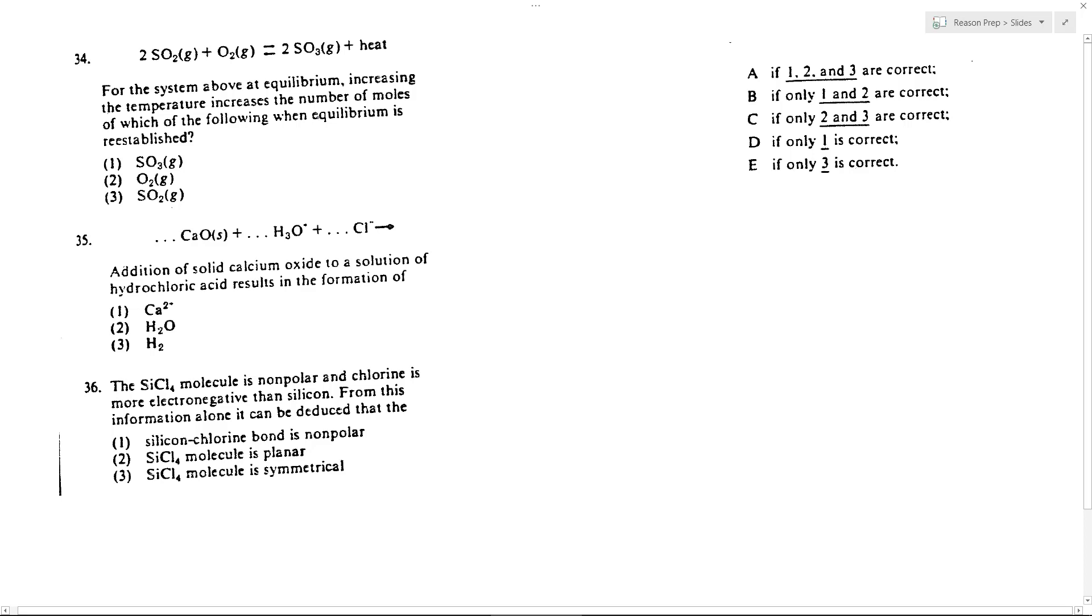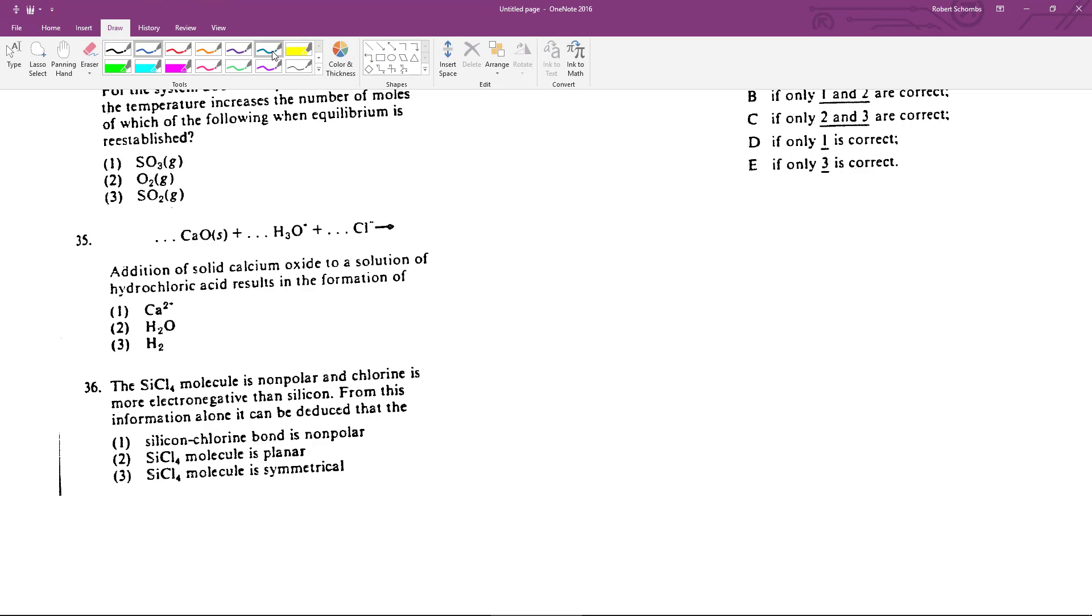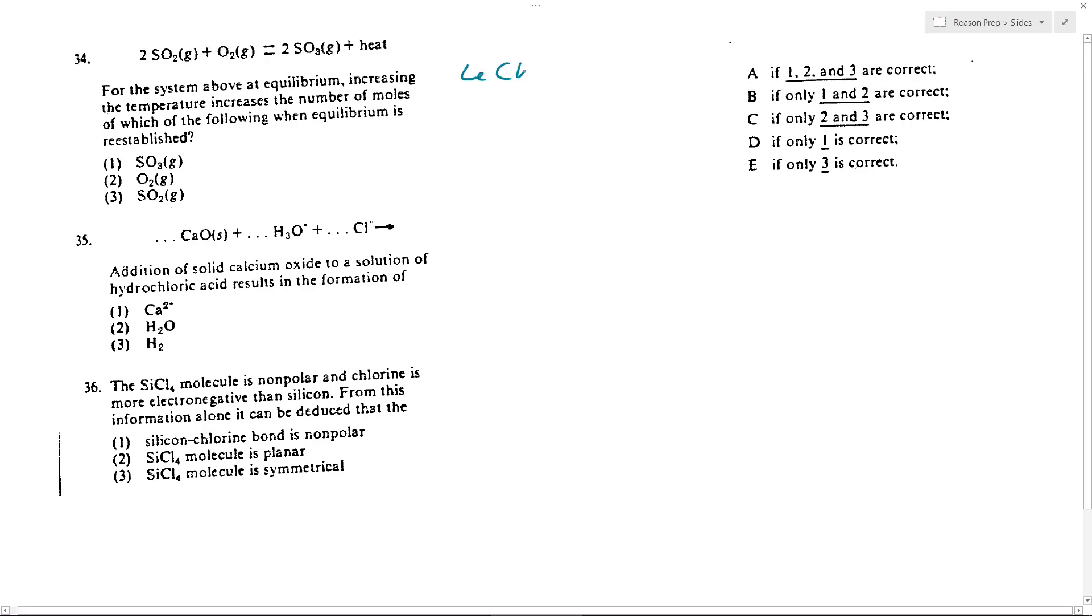In problem 34 we've got a system in equilibrium. We're going to increase the temperature and we want to know which one of these products or reactants would have its moles increase when equilibrium is re-established after increasing the temperature. And so we have essentially in play here Le Chatelier's principle.